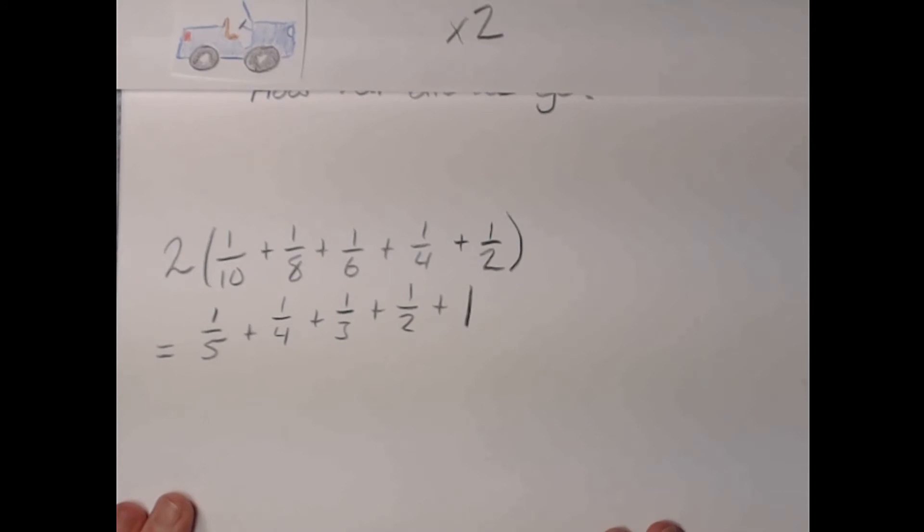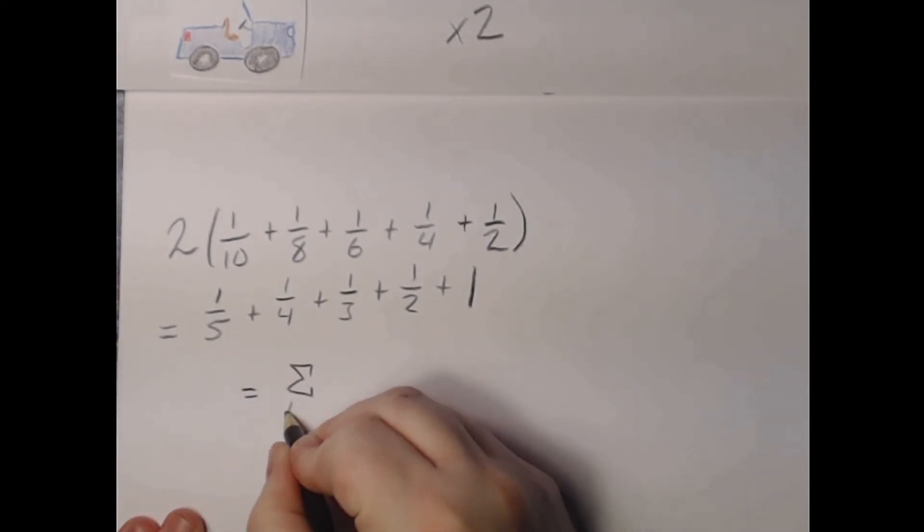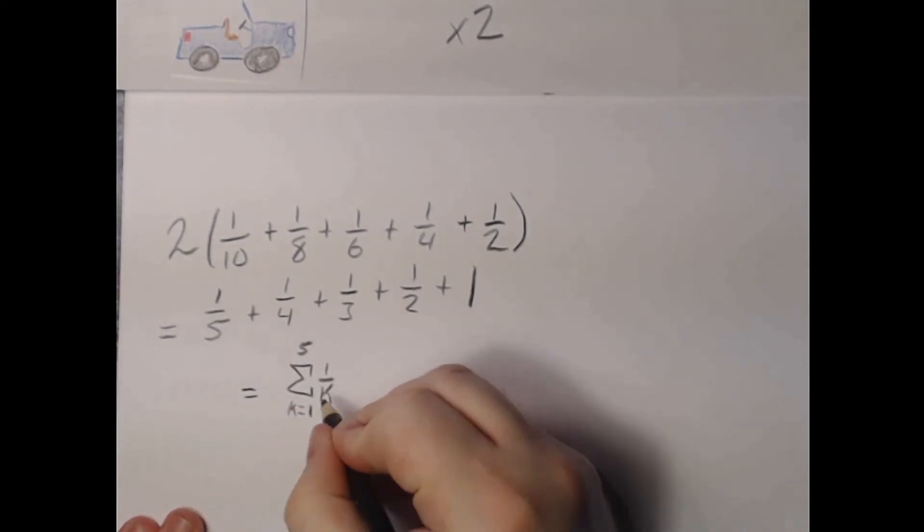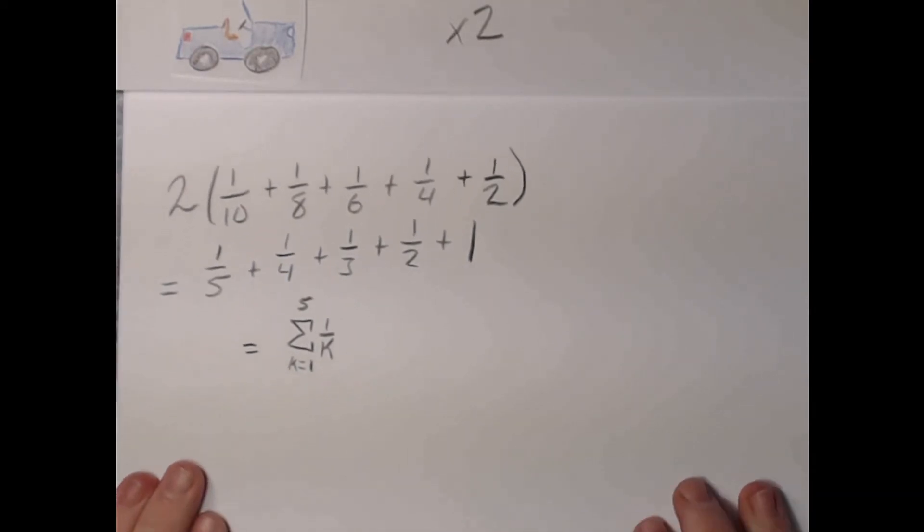This series is called the harmonic series, and we've traveled exactly half of the fifth harmonic number. So asking how far we can travel outward is equivalent to asking how large does this number actually get?